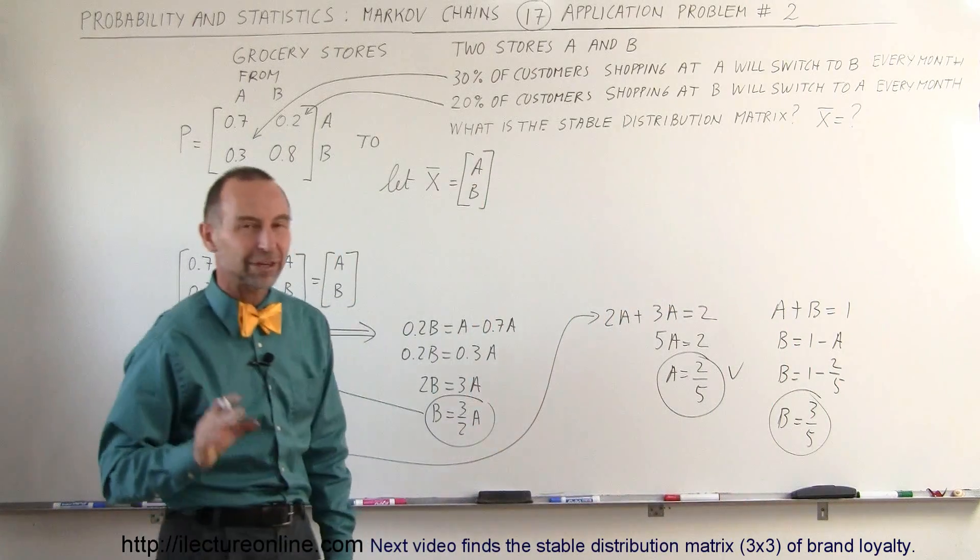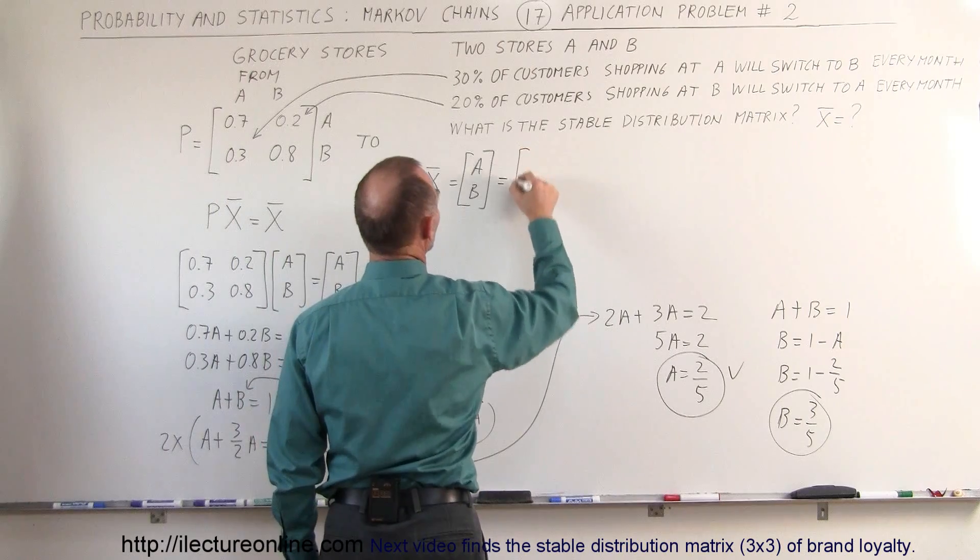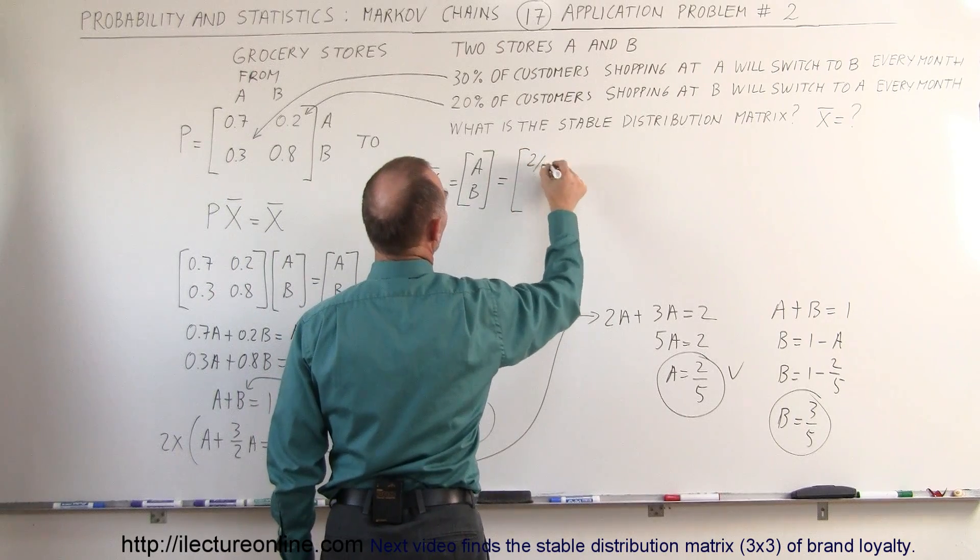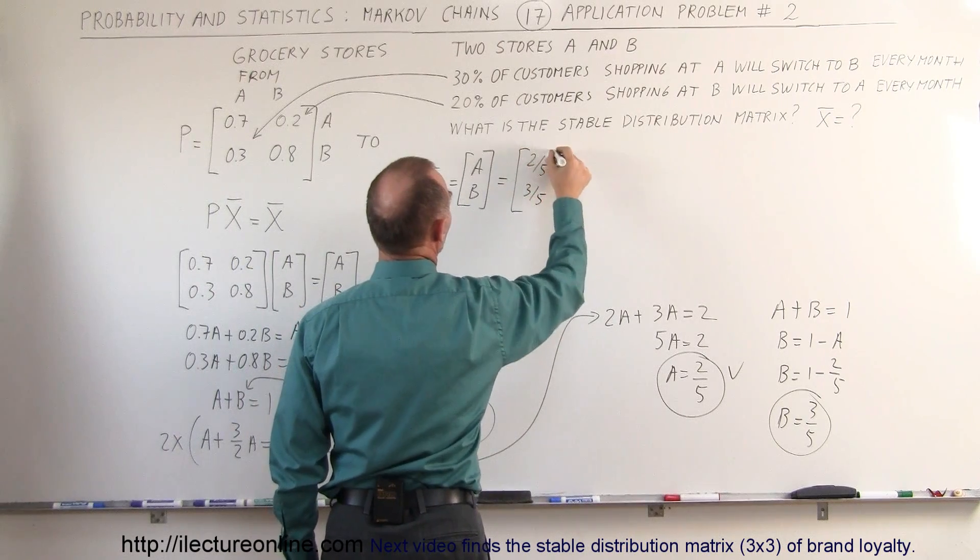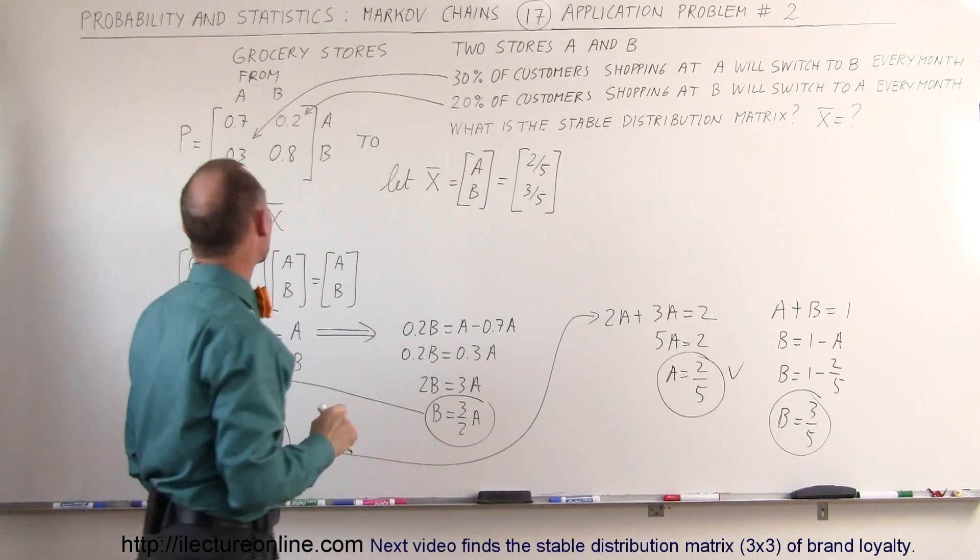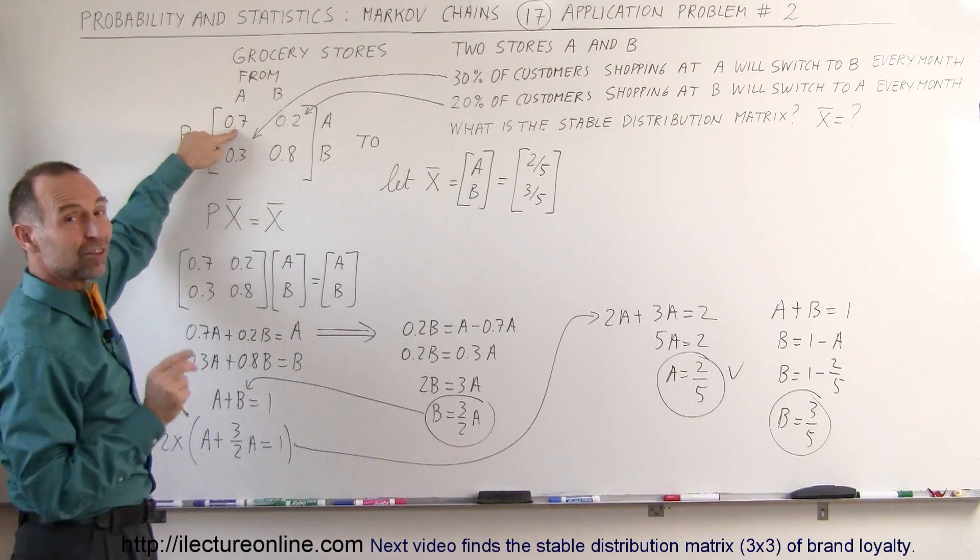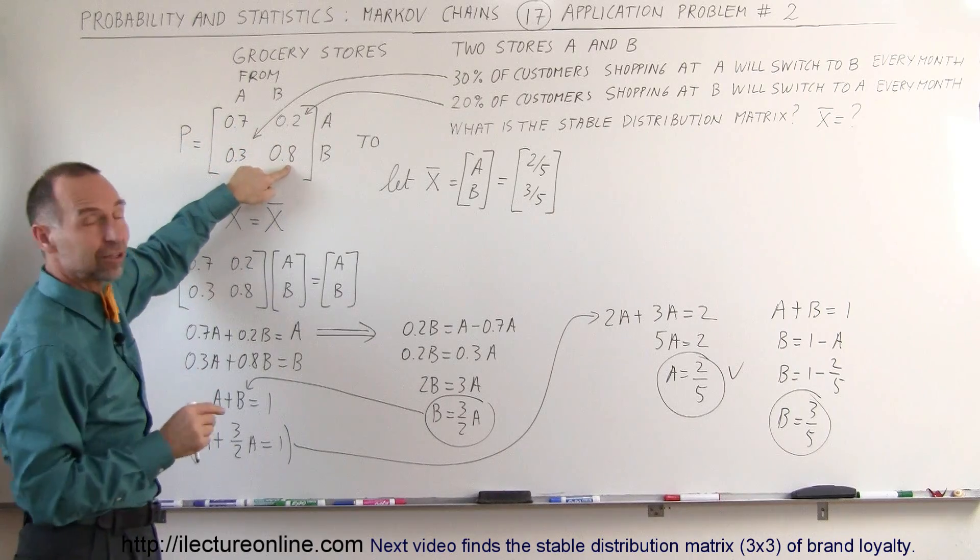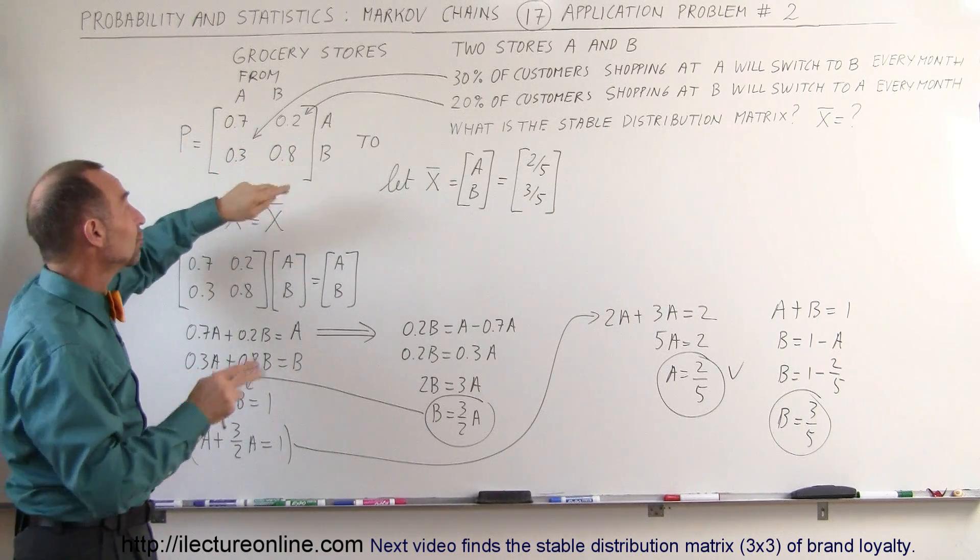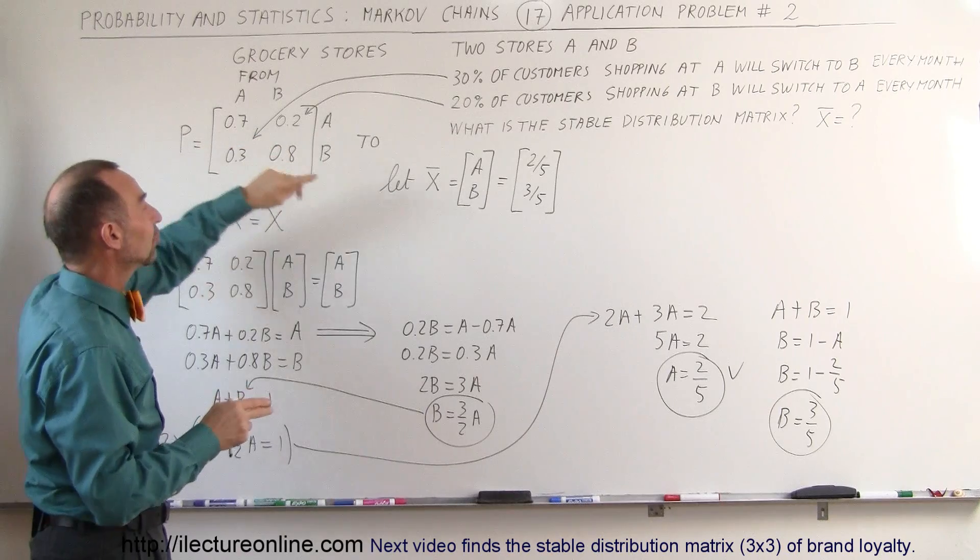And that would therefore mean that B is equal to 3 fifths. So there's the two final states for A and B. That means that this is equal to 2 fifths and 3 fifths. To quickly check to see if that makes sense, yes, because only 70% of the customers at A remain at A.